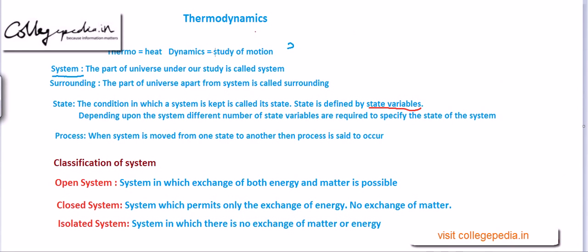In this chapter, basically we will be dealing with ideal gas, so all we have to do is specify the pressure, volume, and temperature, and the state will be specified. When we change any state variable — temperature, pressure, or volume — the state changes. And when the state changes from one state to another, a process is said to occur.